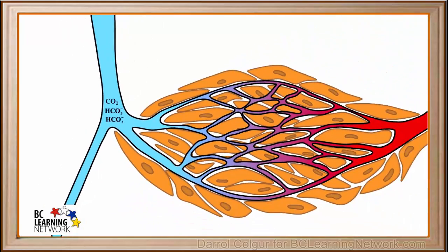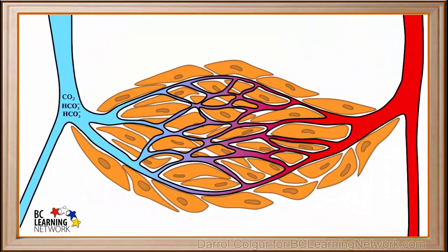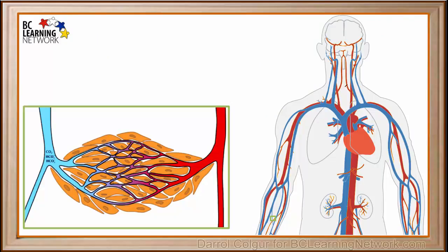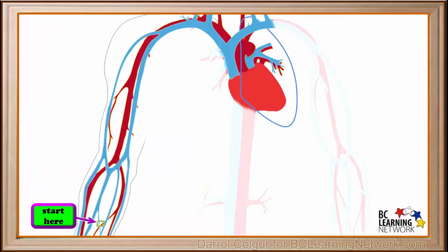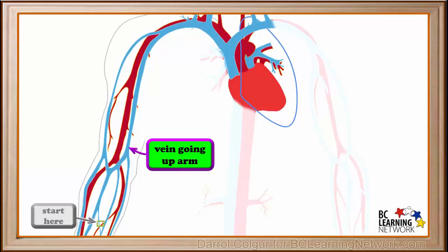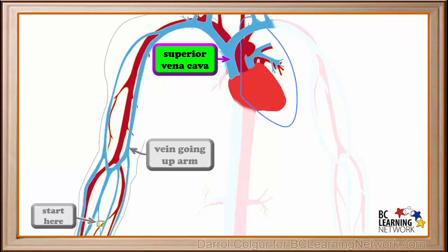Now we'll zoom back out to the arm. We'll track the journey of bicarbonate and carbon dioxide starting here at our spot in the arm. Here is the vein going up the arm. Veins from arms, neck and head merge into a large vein called the superior vena cava, which carries deoxygenated blood to the heart.